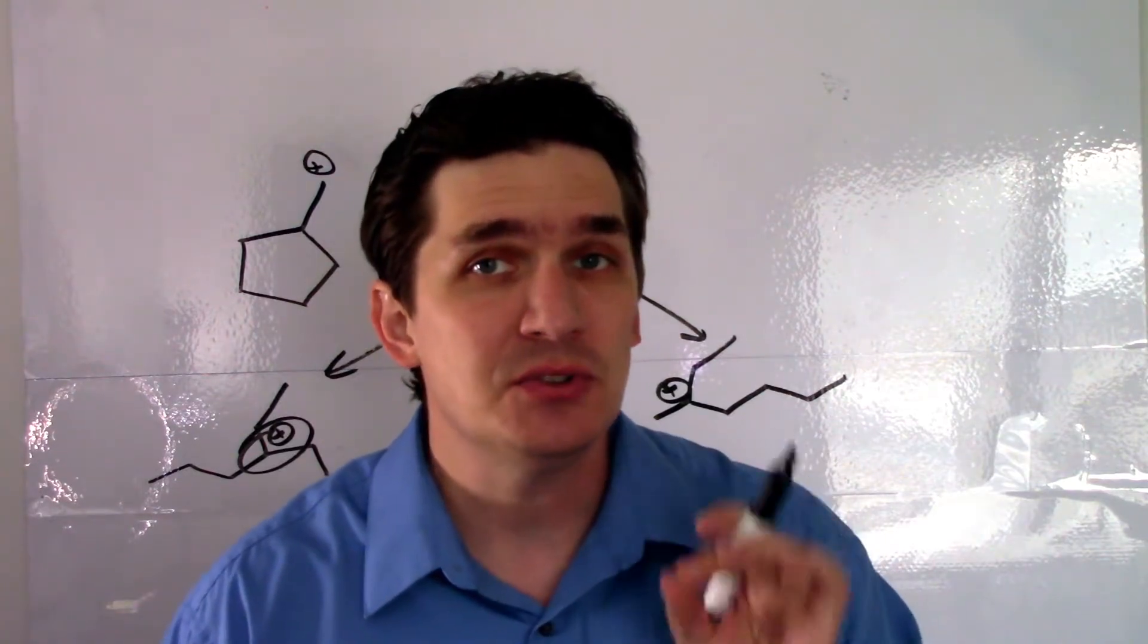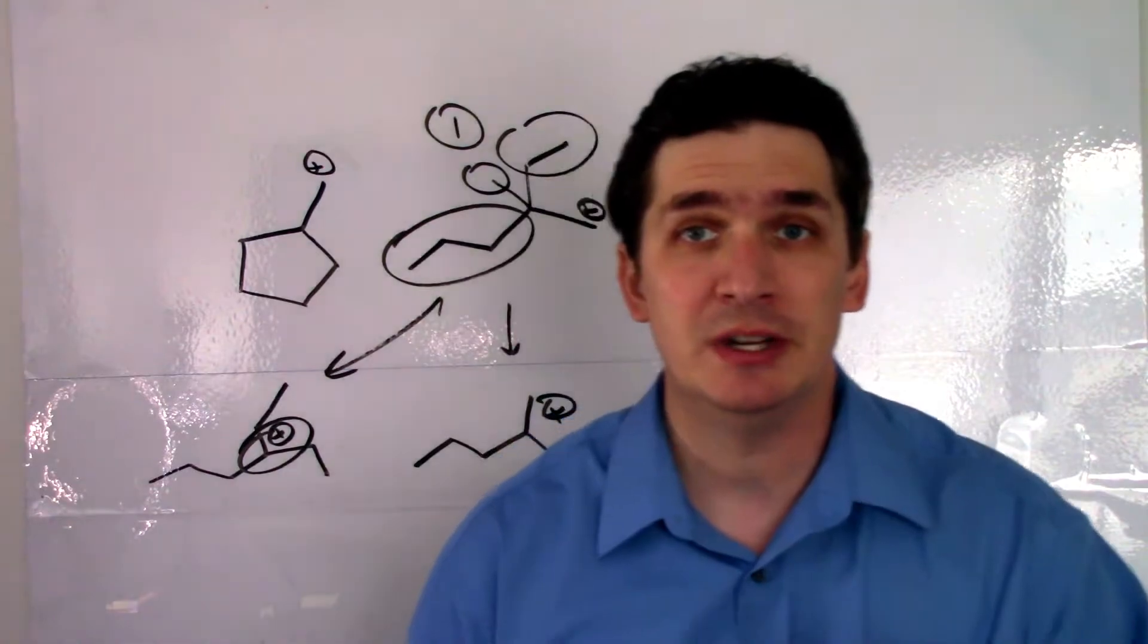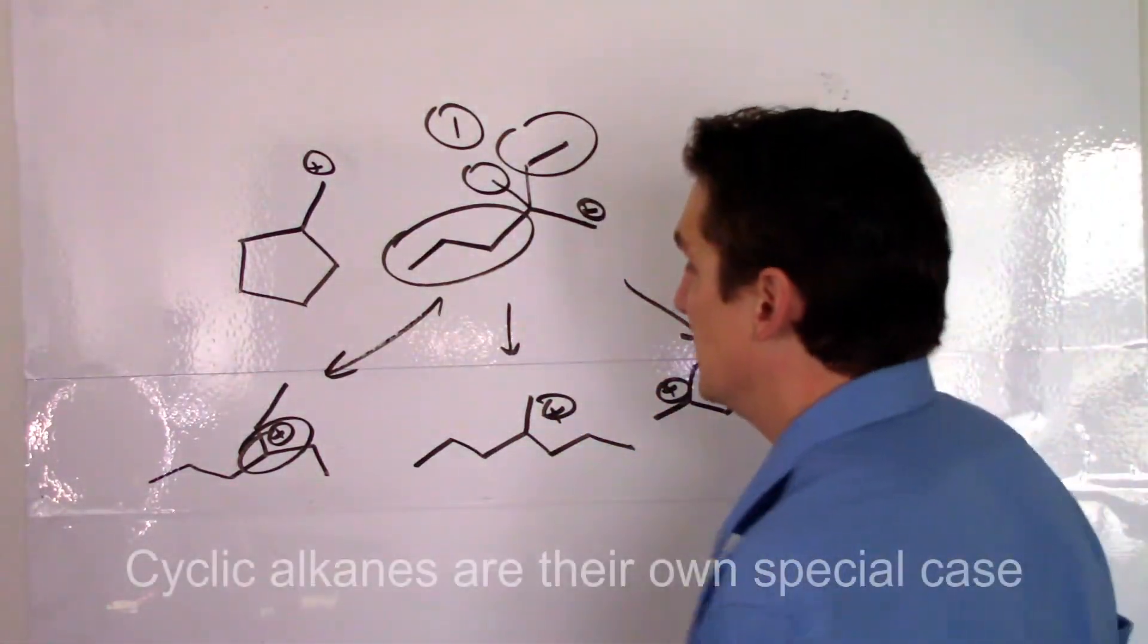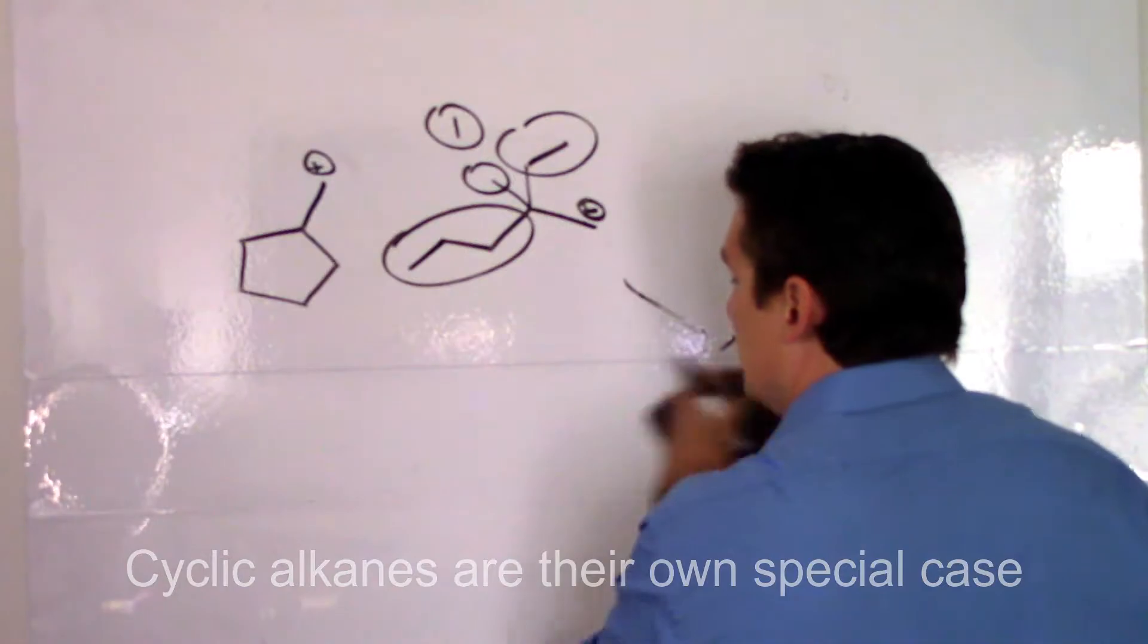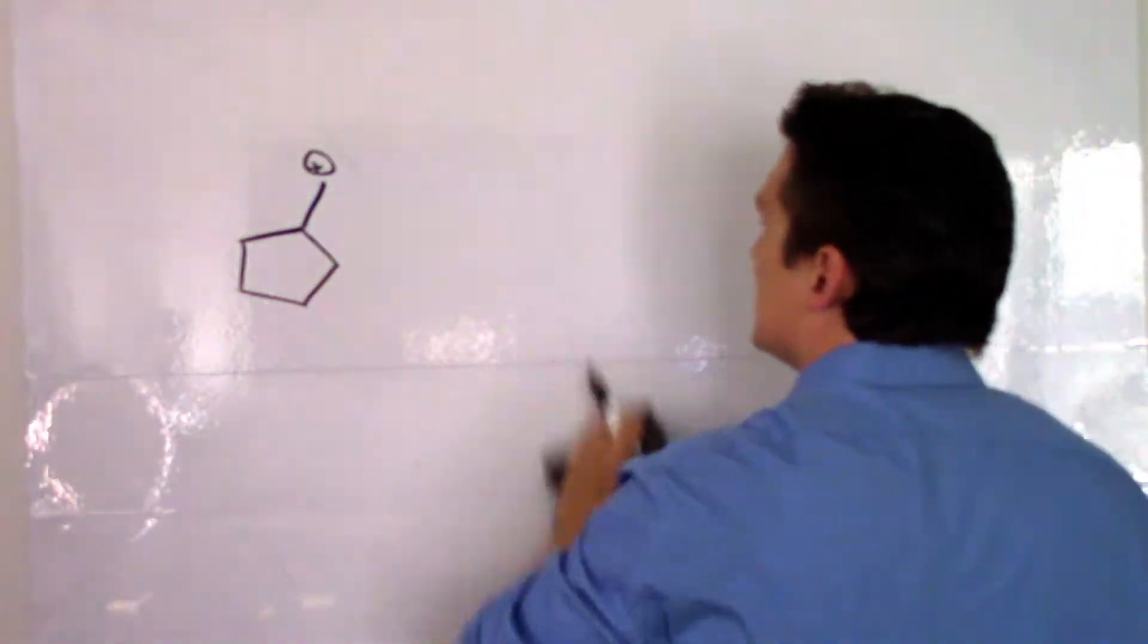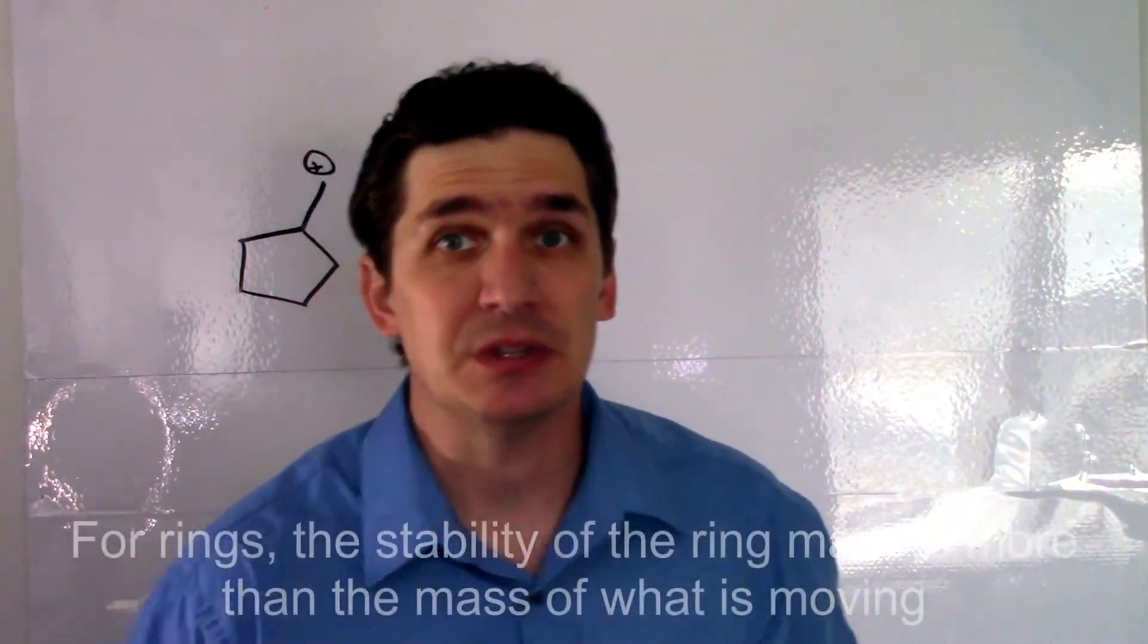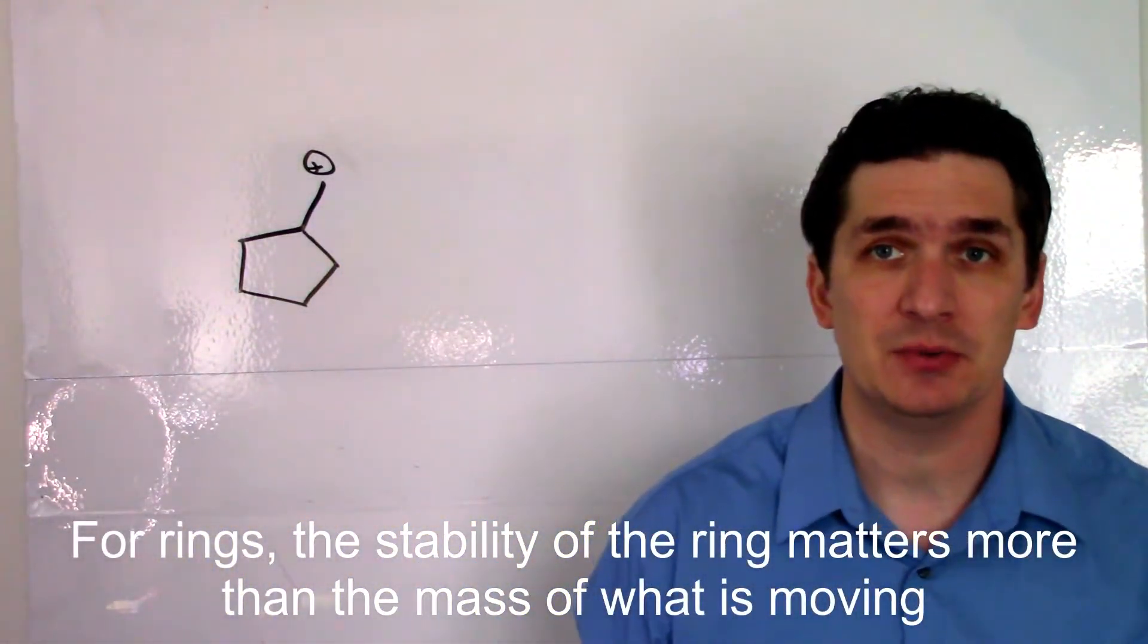Now there's also a special case here. And the special case is what's called a ring opening carbocation rearrangement. Now this is a situation where, if you think about it in terms of the square root of mass, this is gonna look like it doesn't really happen. There is a driving force for this and it has to do with the stability of the ring.